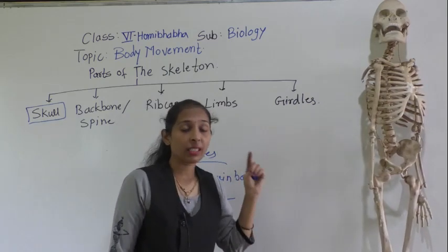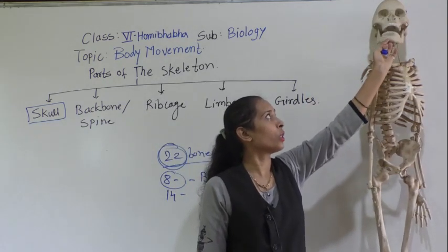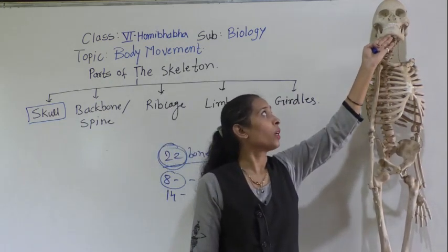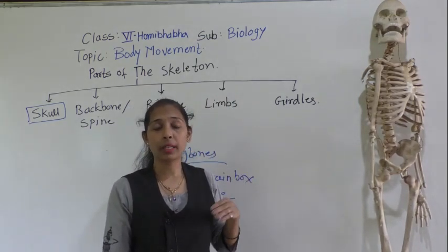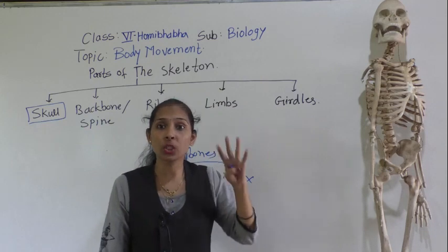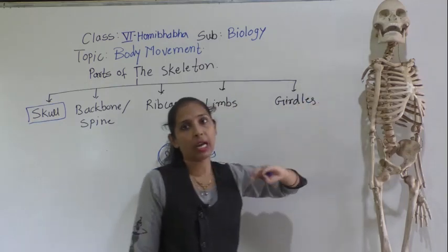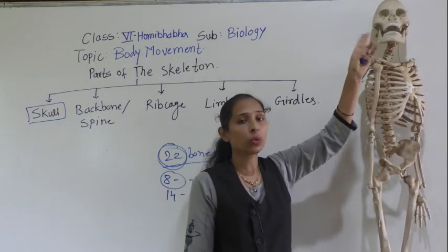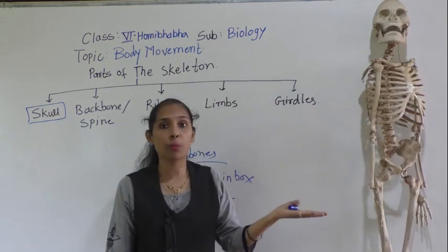All skull bones are fixed and immovable, with one exception — the lower jaw. You can see in the skeleton that the lower jaw can be easily moved. It is called a movable joint. There are two types of jaw: the upper jaw and the lower jaw. The lower jaw can move up and down.